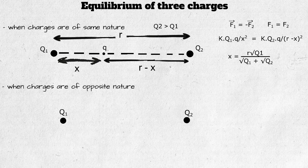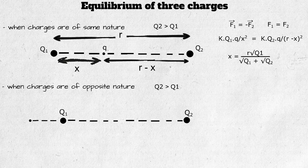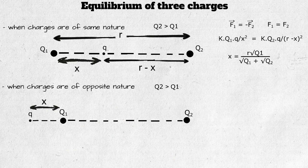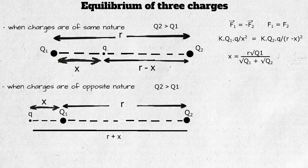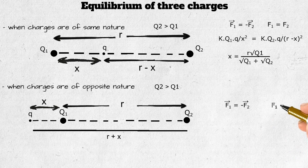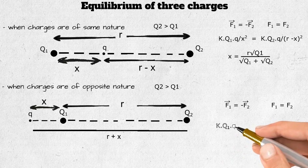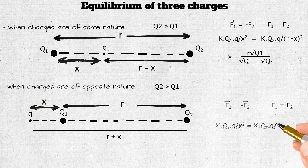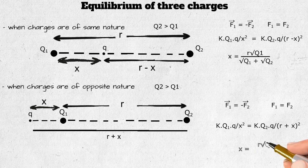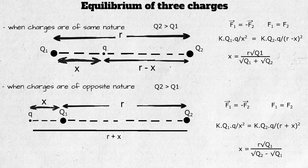If the nature of the two charges is opposite, the equilibrium point will be at the extreme left or right side of the system, and it will always be closer to the smaller charge. Placing a small charge q at that equilibrium point, if its distance from the smaller charge is x, then its distance from the bigger charge is r+x. For equilibrium, F₁ = F₂, giving k·Q1·q / x² = k·Q2·q / (r+x)². Solving: x = r·√Q1 / (√Q2 − √Q1).